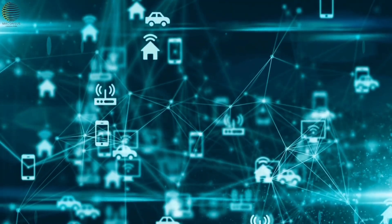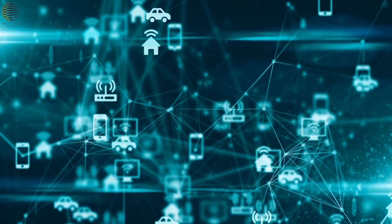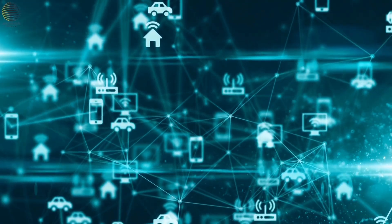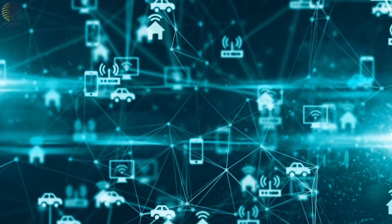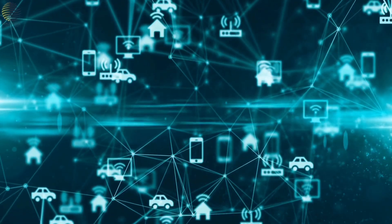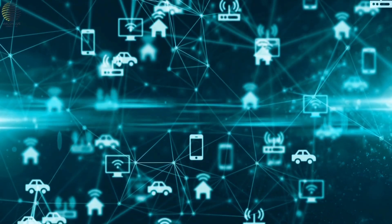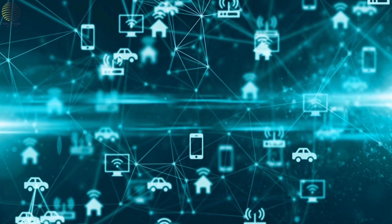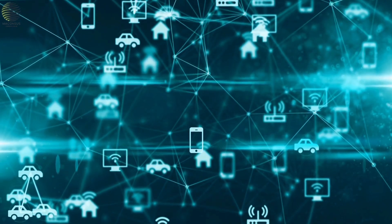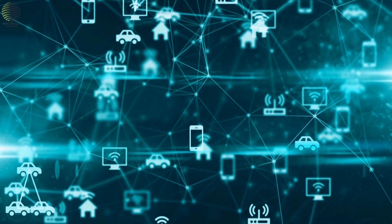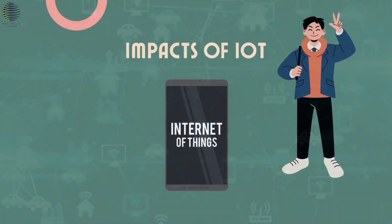Defining the Internet of Things. The Internet of Things, or IoT, encompasses a vast network of devices embedded with sensors, software, and connectivity to exchange data and perform tasks without human intervention. These devices can range from everyday gadgets like smart thermostats and wearable devices to industrial machines and smart city infrastructure.